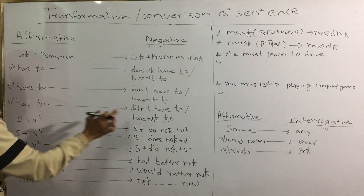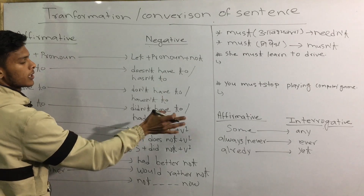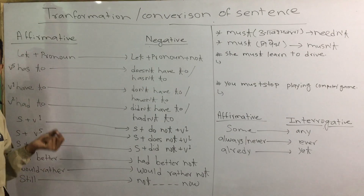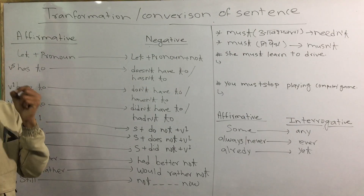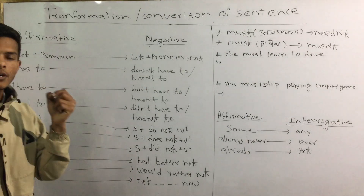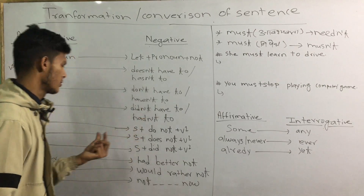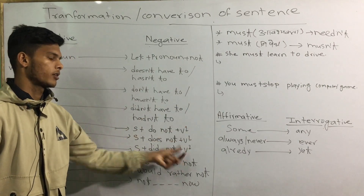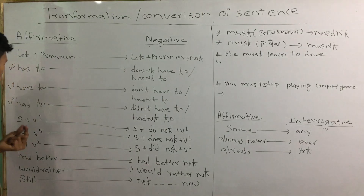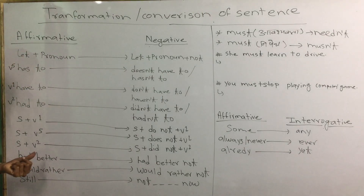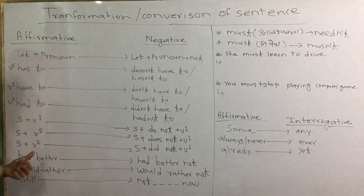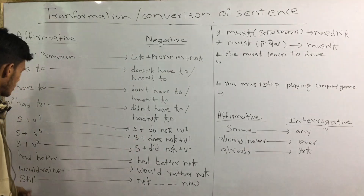B2 call, not, and B1 call. When subject plus B1, B5, B2 — B1 call: do, B5 call: does, B2 call: did — not, B1 call. Had, had better not, would rather not.